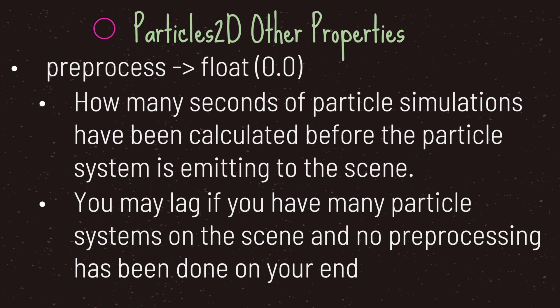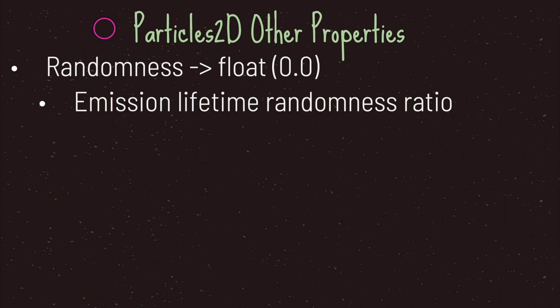The preprocess property is very important — its value determines how many seconds of particle simulations have been calculated before the particle system starts emitting to the scene. This matters because if you have multiple particle systems in your scene, you may experience some lag, and to alleviate that lag you need to do some preprocessing before your game starts running. The randomness property is the emission lifetime randomness ratio — if you set a value in the lifetime property, the randomness property can determine how many particles will live between the values of zero and one.